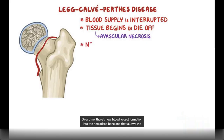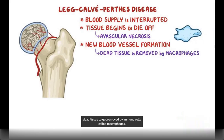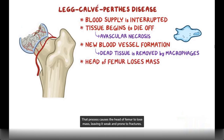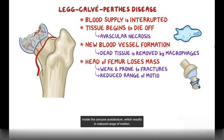Over time, there is new blood vessel formation into the necrotized bone that allows the dead tissue to get removed by immune cells called macrophages. That process causes the head of the femur to lose mass, leaving it weak and prone to fractures. When this happens, the head of the femur becomes misshapen and can no longer smoothly rotate inside the concave acetabulum, which results in reduced range of motion.